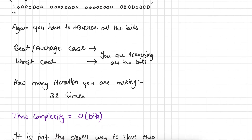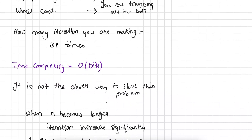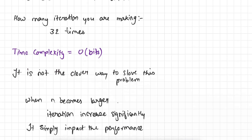So what will be the time complexity of this solution? Obviously it depends upon the number of bits. That's why the time complexity of this solution is going to be O(number of bits). But this is not the clever way to solve this problem. Because when n becomes larger, your iterations increase significantly. Right now I am talking about 32-bit integers. If you have 64-bit integers, you have to traverse 64 times to calculate the number of set bits. When your n becomes larger, your iterations increase and it simply impacts the performance of the algorithm.